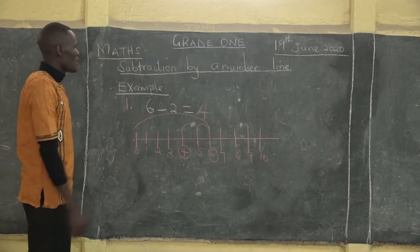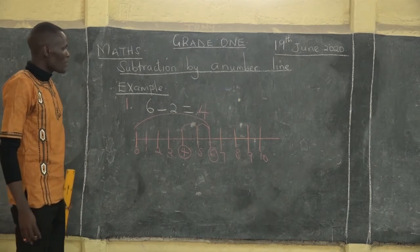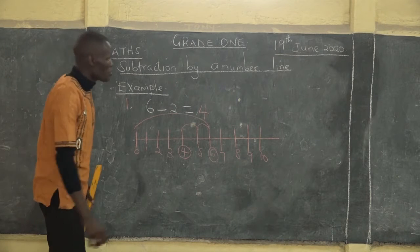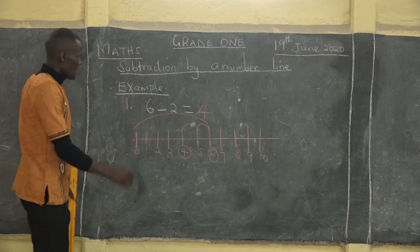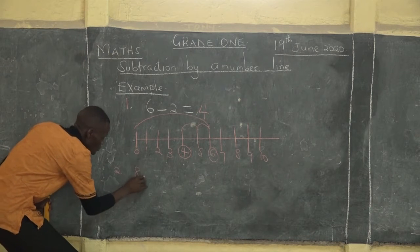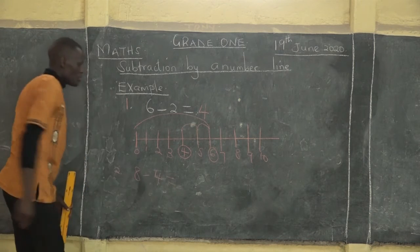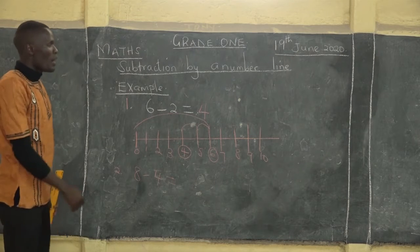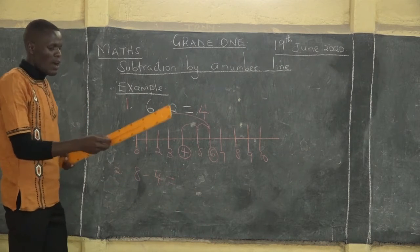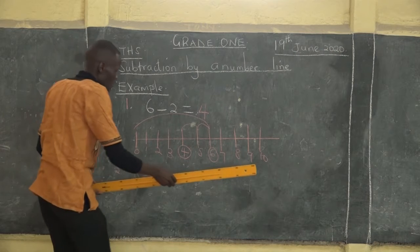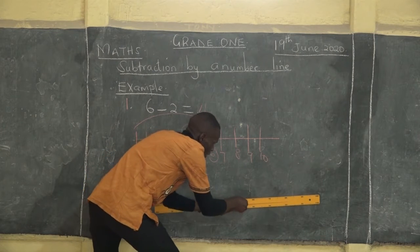So that means six take away two is equal to four. Now let's have example two — eight take away four. Having your ruler, let us draw the number line.